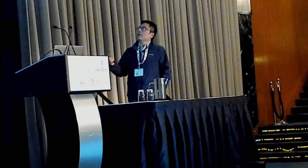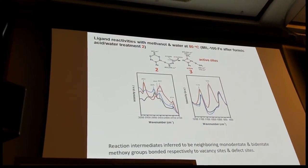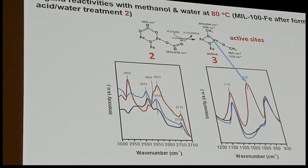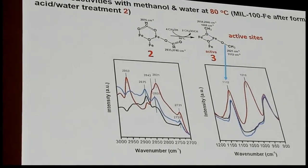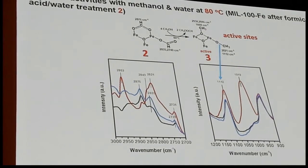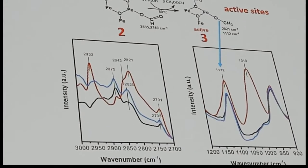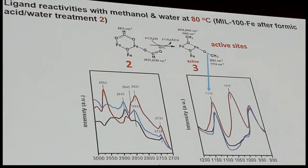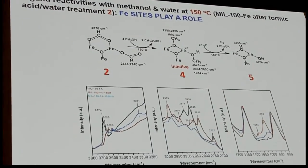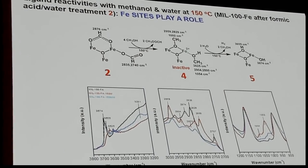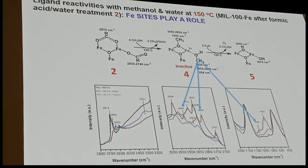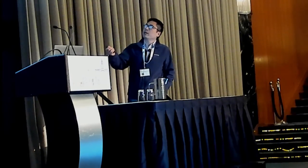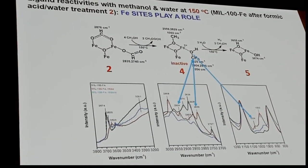In contrast, after removing the blocking ligands, these ligands are more reactive with methanol. We still see bidentate methoxy, and in addition we see monodentate methoxy on the vacancy sites. We think this structure is the active site for the reaction. To understand why the catalyst deactivates, we performed the same experiment at 150°C. At this temperature we did not see the terminal methoxy species on vacancies, because it reacts with other methoxy groups to form dimethyl ether very fast.